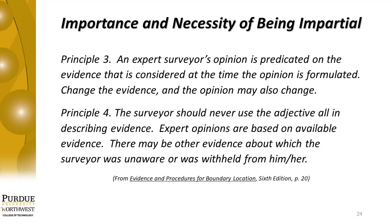Principle 3 says that an expert surveyor's opinion is predicated on the evidence that is considered at the time the opinion is formulated — change the evidence, and the opinion may also change. A surveyor's opinion is based on the evidence originally created, then described, and subsequently recovered and evaluated. Since evidence is a major factor in helping the surveyor formulate the opinion, if the evidence is ever altered by adding to or subtracting from, the expert's opinion may also be affected. Surveyors should be very careful in making premature opinions based on partial, incomplete, or faulty evidence before sufficient evidence is recovered and evaluated.